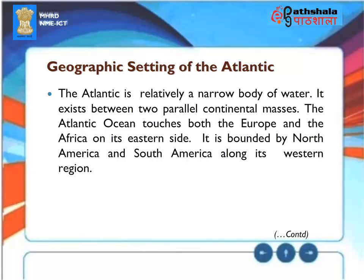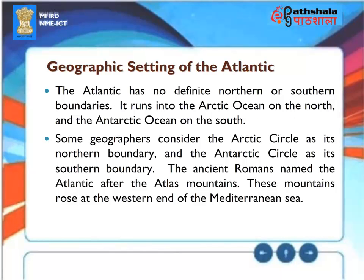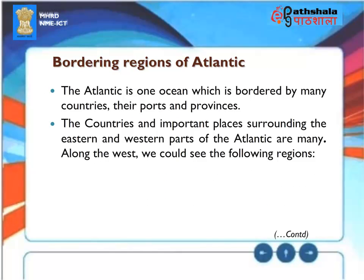Geographic Setting of the Atlantic: The Atlantic is a relatively narrow body of water existing between two parallel continental masses. It touches both Europe and Africa on its eastern side, and is bounded by North America and South America along its western region. The Atlantic has no definite northern or southern boundaries — it runs into the Arctic Ocean on the north and the Antarctic Ocean on the south. The ancient Romans named the Atlantic after the Atlas Mountains, which rose at the western end of the Mediterranean Sea.